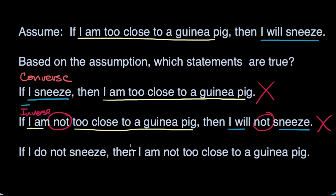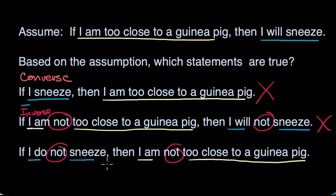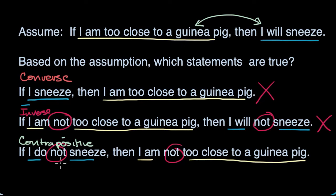Now let's look at the last statement. This one has some 'nots' in it, and it also swapped the 'if' and 'then' like the converse, but it also added the 'nots.' So: if I do not sneeze, then I am not too close to a guinea pig. This is known as the contrapositive — a very fancy word. It really just means you swapped the two parts and negated them. It's a combination of the inverse and the converse.